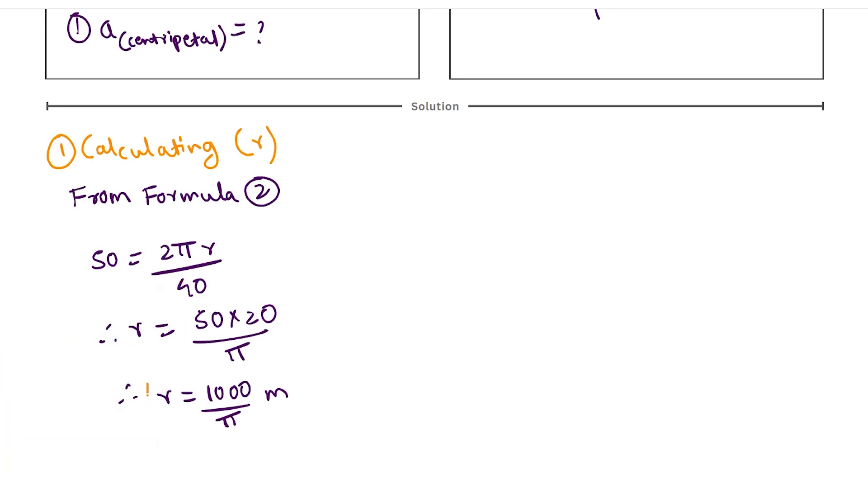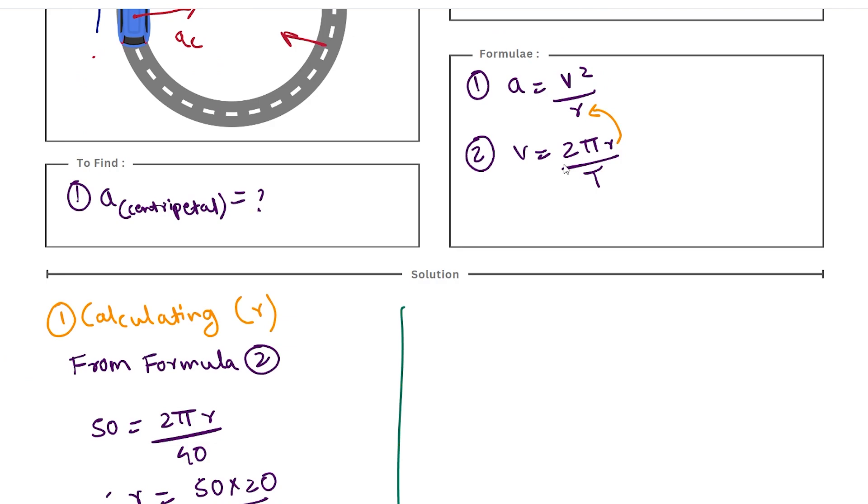The second part of our numerical is to calculate centripetal acceleration, a_c. We know that a = v² / r as per formula 1.